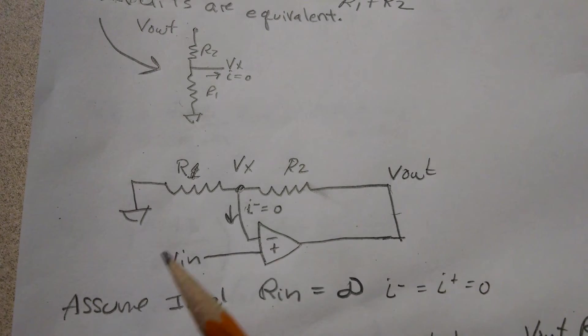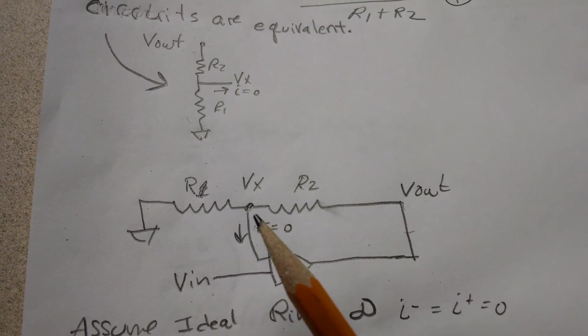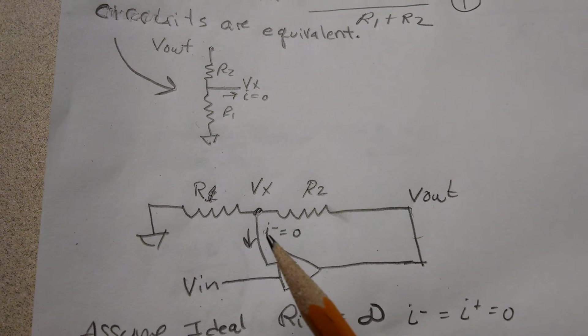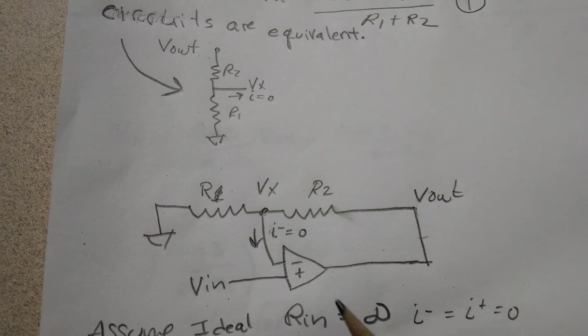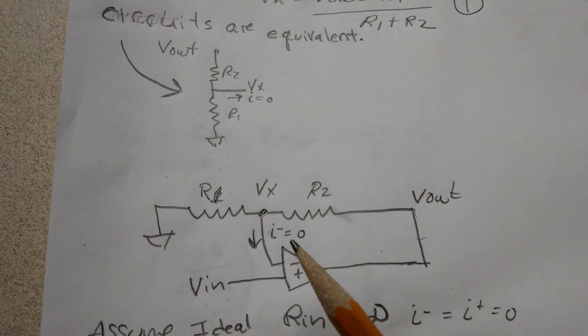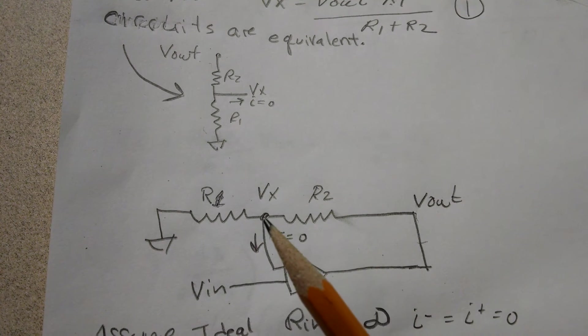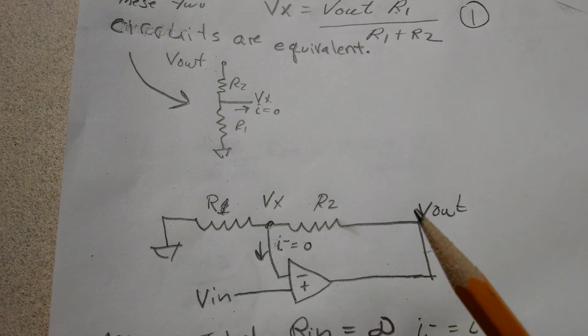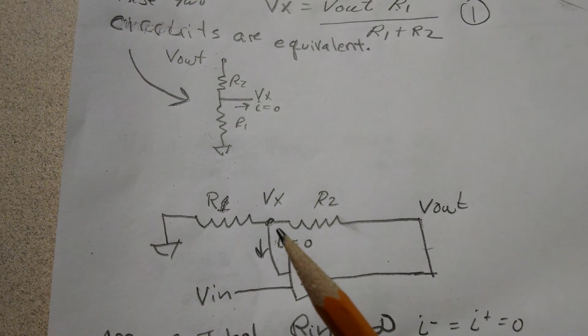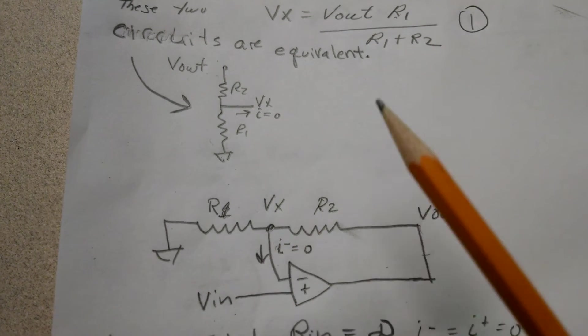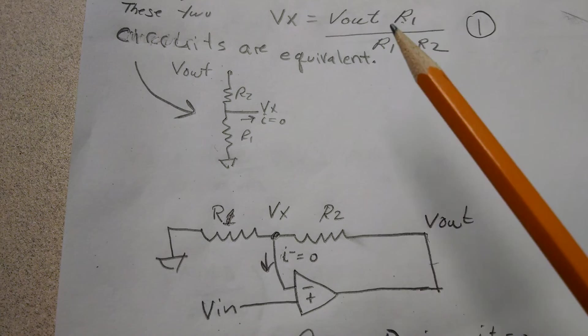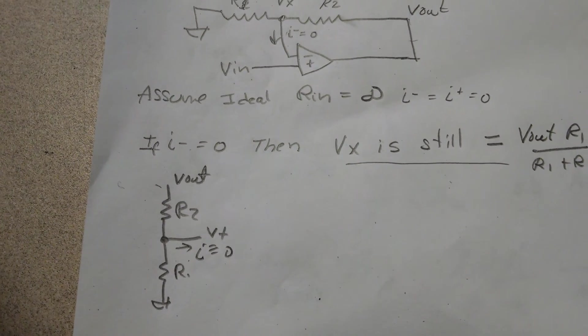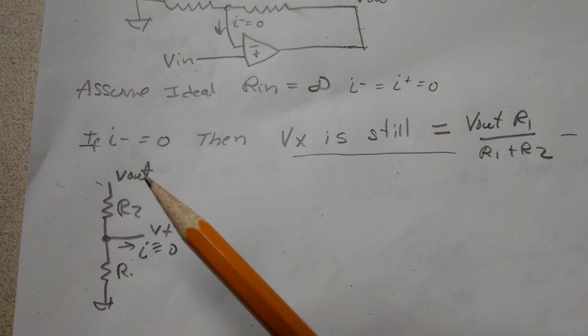If I put this in the op-amp circuit, I- in an ideal circuit because Rin is infinite is zero. So from the perspective of Vx, it's really just Vout is the input and Vx would be the output, and it would just get a voltage division equation.